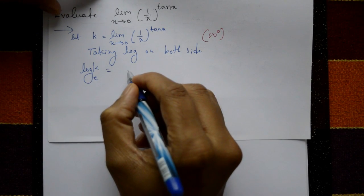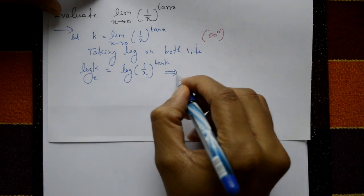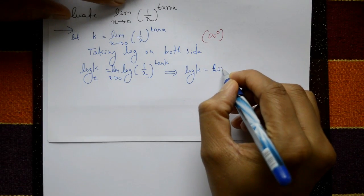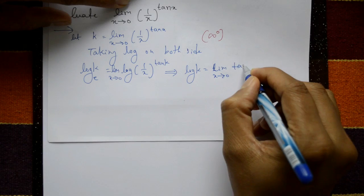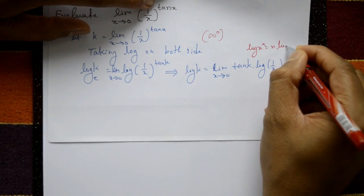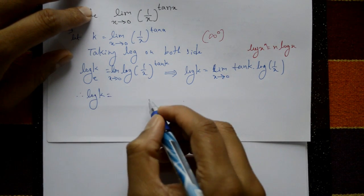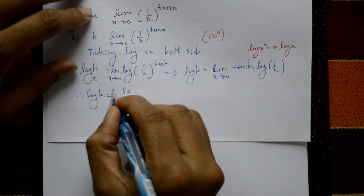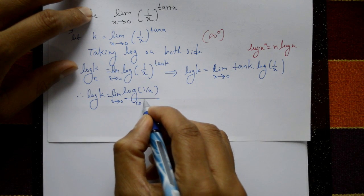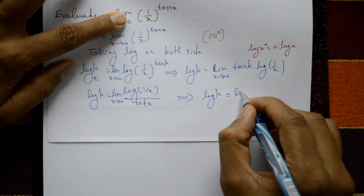Taking log on both sides: log k to the base e equals the limit as x tends to 0 of tan x into log(1/x). Using the log property log(x^n) = n log x, this becomes log k equals the limit of log(1/x) divided by cot x, since tan x equals 1 by cot x.